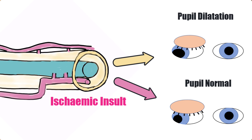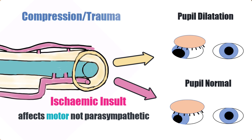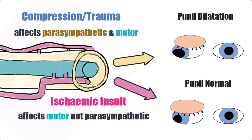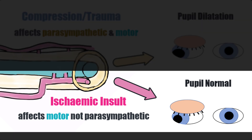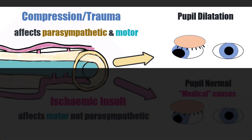If you have an ischemic insult to this nerve due to atherosclerotic disease in downstream vessels, that is going to affect the motor component of cranial nerve 3 significantly — the blood supply to the core of the nerve will be interrupted. But the parasympathetic fibres that control the pupil remain happily supplied by blood coming from the surface of the nerve via those pia mater capillaries. On the other hand, if we had a space-occupying lesion, an aneurysm, or trauma to this nerve, that is going to very much impact the parasympathetic fibres on the outside of the nerve — those fibres are first in line to take a hit.